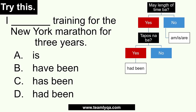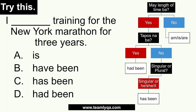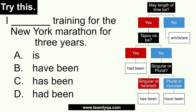Since the action isn't done, next question: is the subject singular or plural? The subject here is I, which takes a plural treatment. So the answer is have been. The complete sentence is: I have been training for the New York Marathon for three years — present perfect progressive, because it started in the past and is still continuing now.